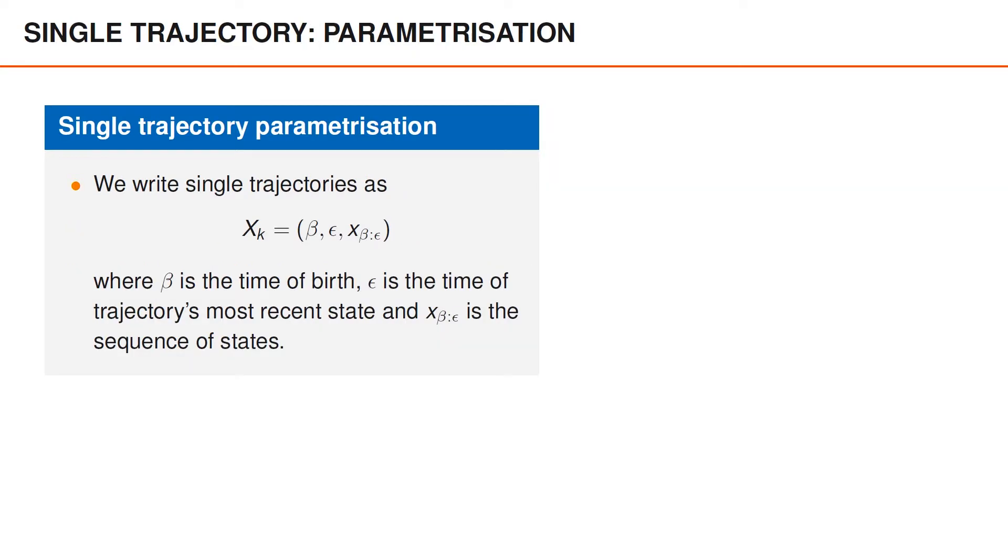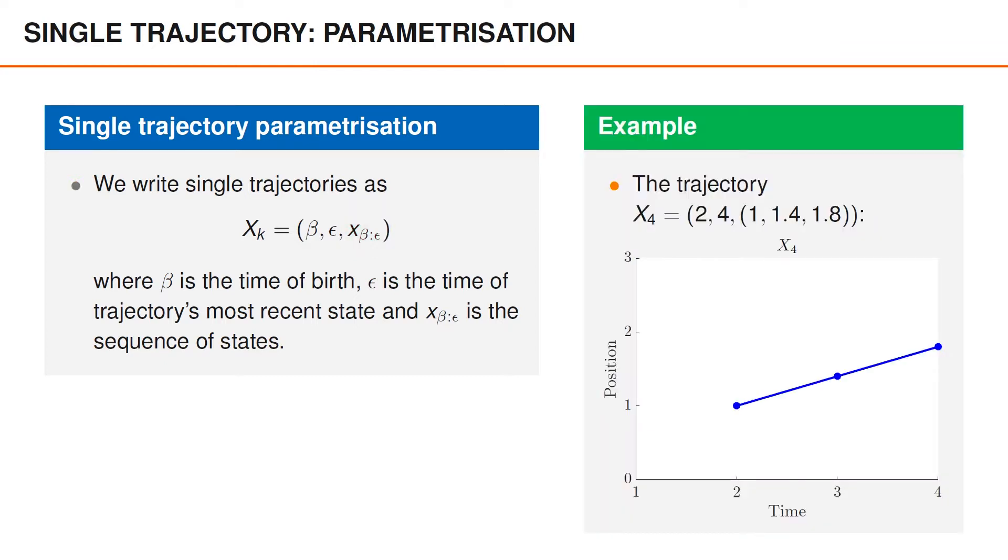To obtain a better idea about what a set of trajectories is, let us look at how we can parameterize our variables. In these videos, we parameterize single trajectories using a variable capital X_K, where the first element beta is the time of birth. The second element, epsilon, is the time of the trajectory's most recent state, and I'll elaborate on what we mean by this shortly. Finally, the trajectory variable also contains the state vectors in the interval from beta to epsilon. As an example, consider a trajectory capital X_4 that starts at time 2 and ends at time 4, and that takes the values 1, 1.4, and 1.8 in that interval. That trajectory is illustrated in the figure.